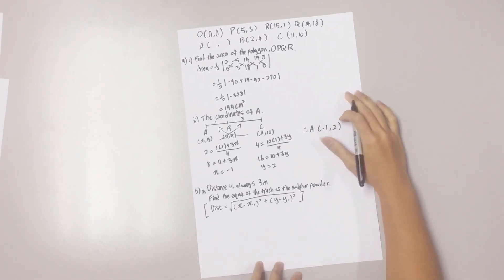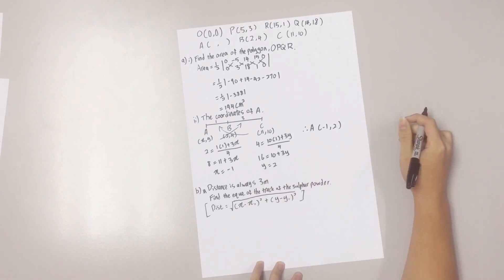Okay, now let's go to question B. Find the equation of the track of the sulfur powder.